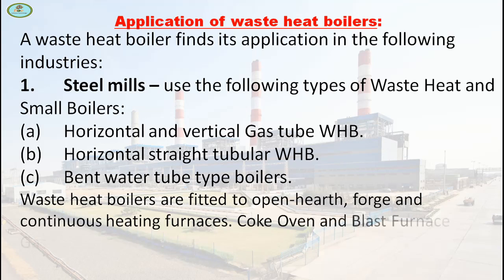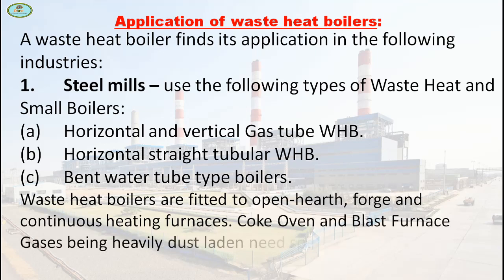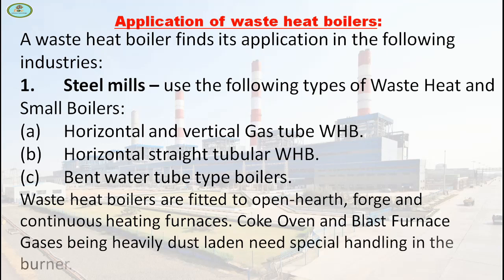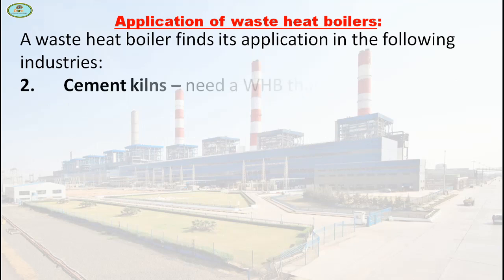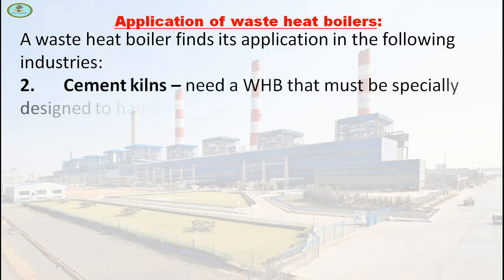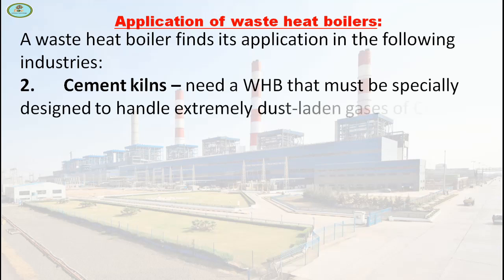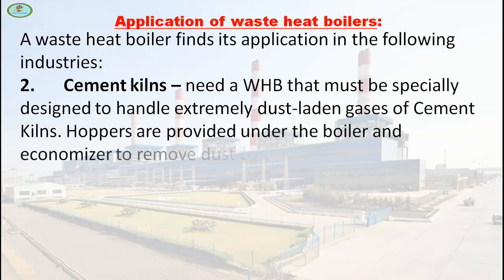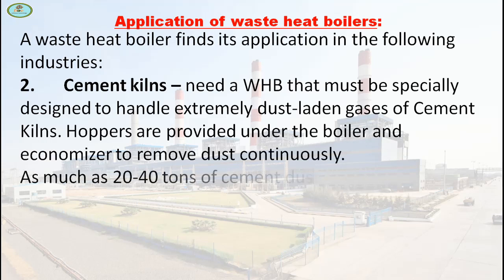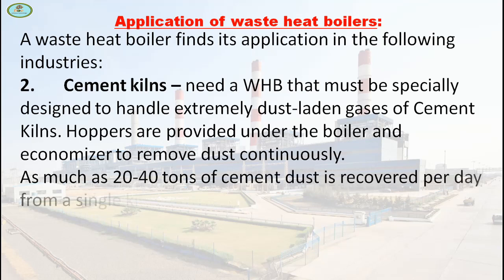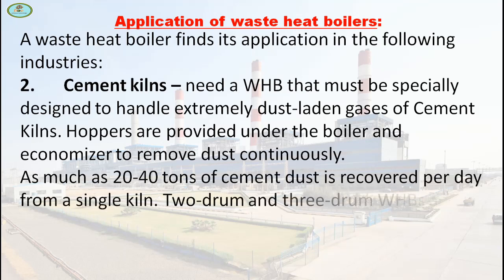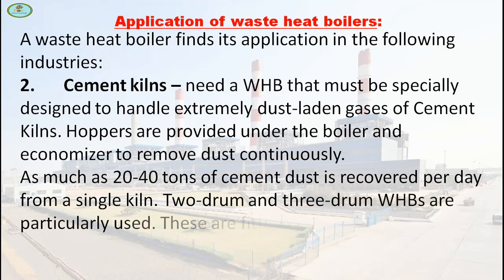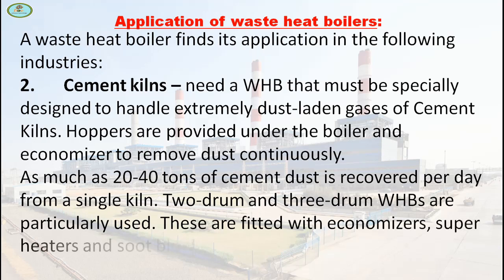Coke oven and blast furnace gases, being heavily dust-laden, need special handling in the burner. Next is cement kiln. A WHB must be specially designed to handle the extremely dust-laden gases of a cement kiln. Hoppers are provided under the boiler and economizer to remove dust continuously. As much as 20 to 40 tons of cement dust is recovered per day from a single kiln. Two-drum and three-drum WHBs are particularly used, fitted with economizer, superheaters and soot blowers.